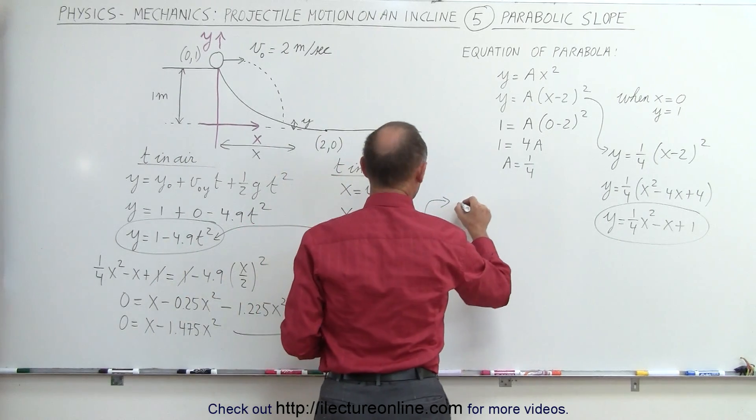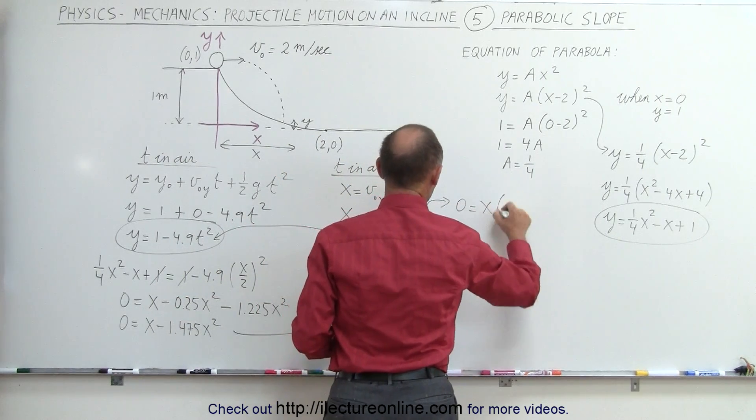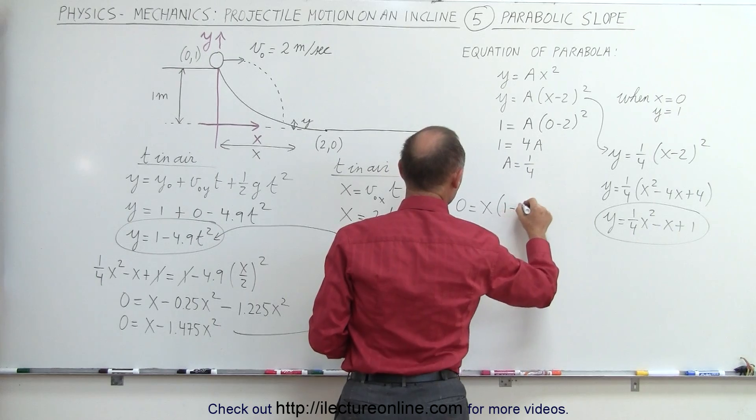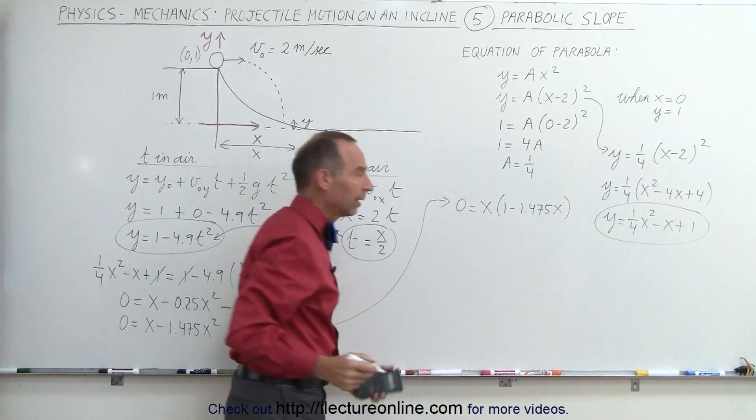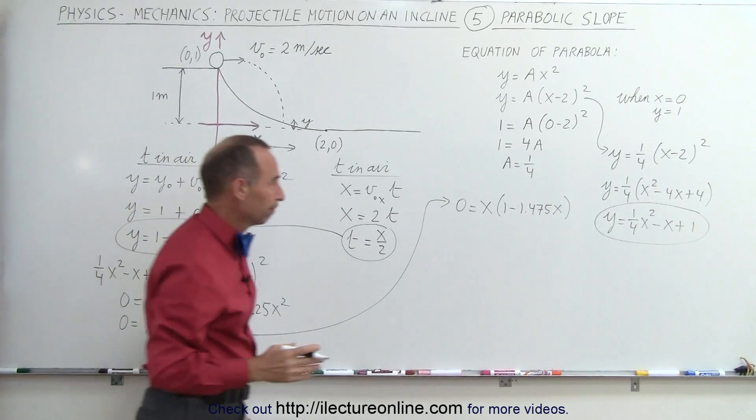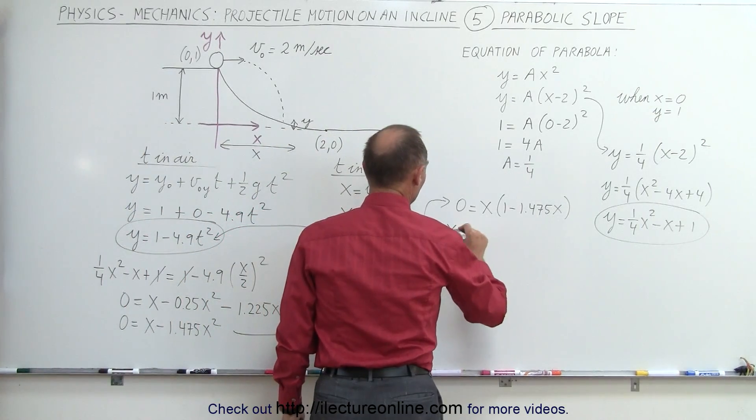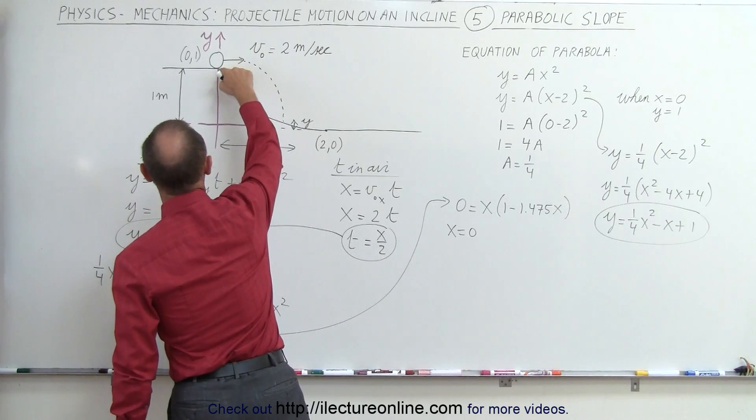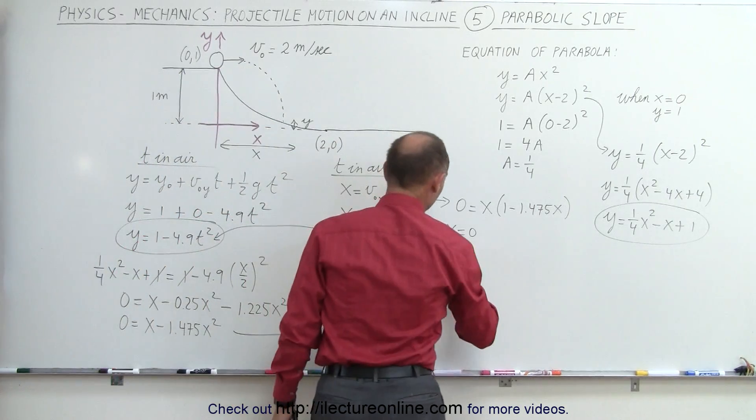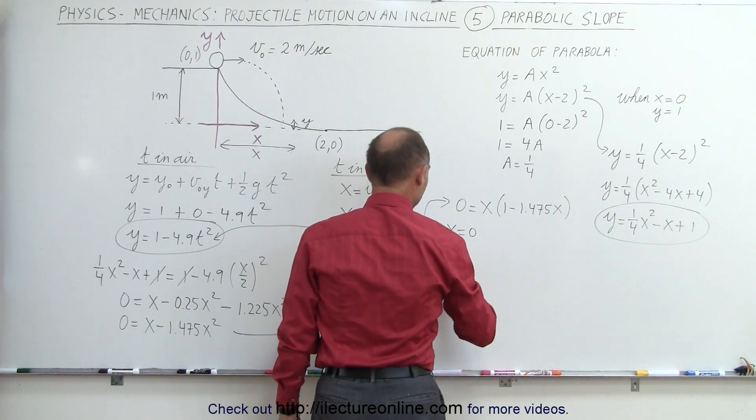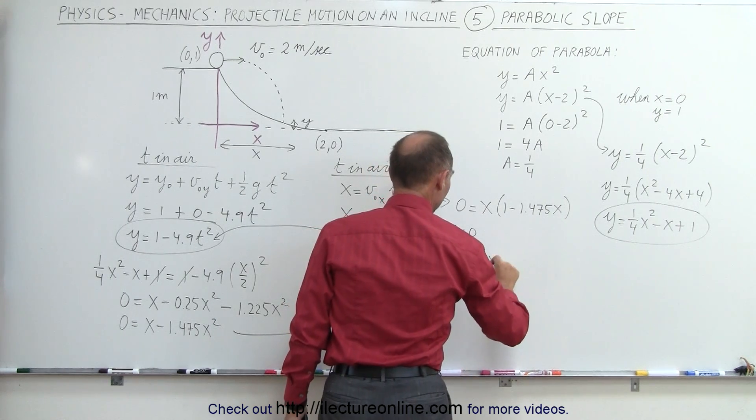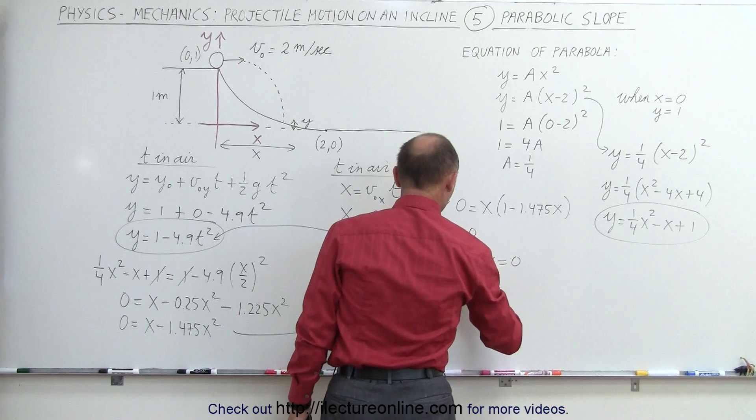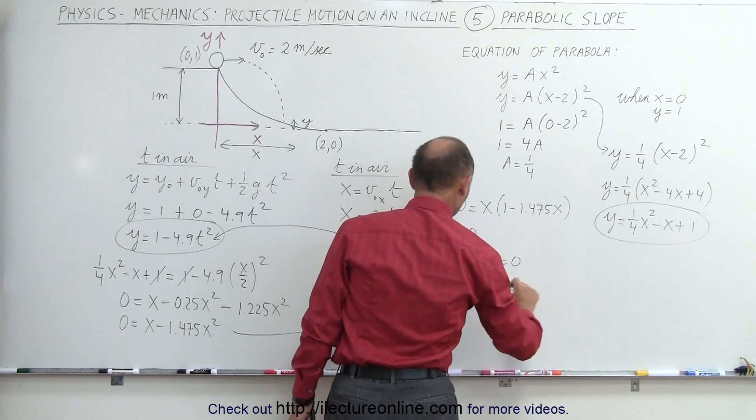we're going to factor out an x, we get 0 equals x times (1 minus 1.475x). That gives us two solutions. We say that x equals 0, and that makes sense because it's on the incline right here when x equals 0.